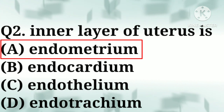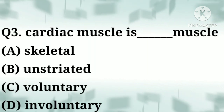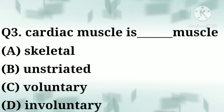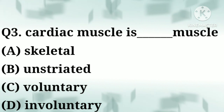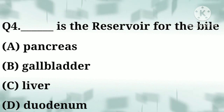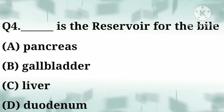Correct answer: option A, endometrium. Question number three: cardiac muscle is a blank muscle — option A: skeletal, option B: unstriated, option C: voluntary, option D: involuntary. Correct answer: option D, involuntary. Question number four: blank is the reservoir for bile — option A: pancreas.